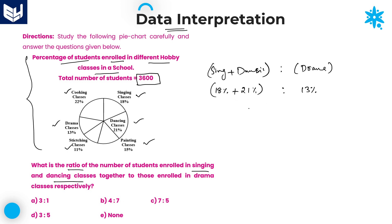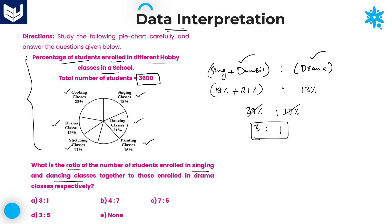Now calculate: 18 plus 21 equals 39%. The ratio is 39% to 13%. Cancelling with 13, we get 3 is to 1. The required ratio is 3:1, which is option A — the right answer for this question.